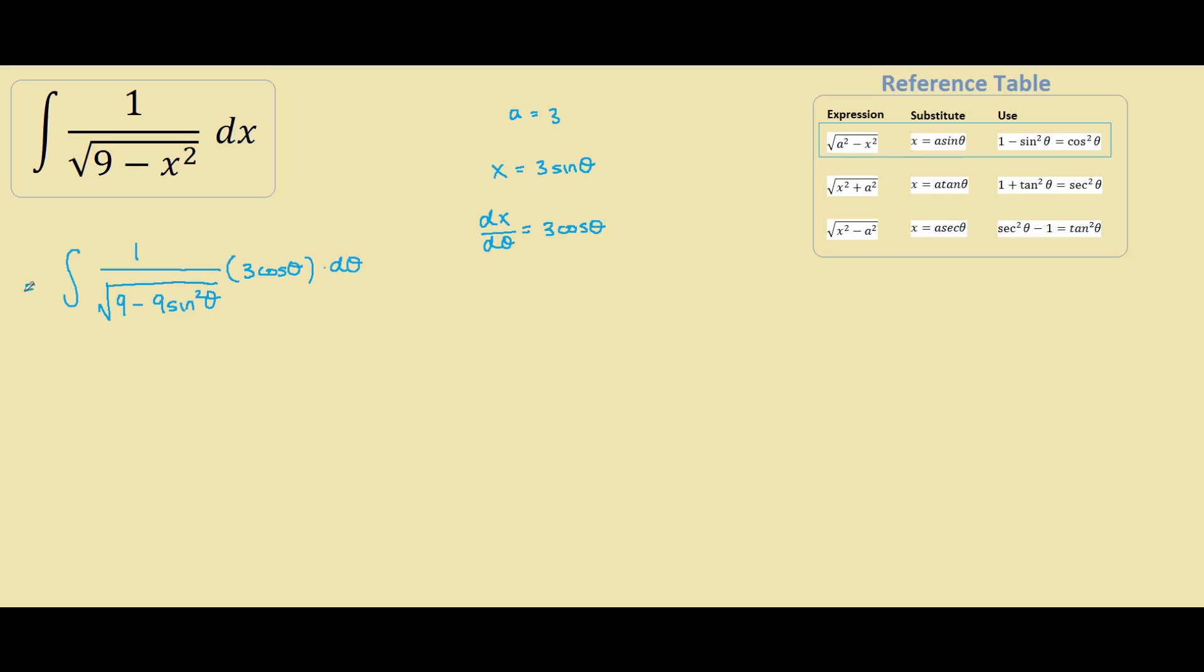Our next step is to recognize that 9 is a common factor under the square root. We can factor that out. So we have 3 cos theta times dθ over the square root of 9. Take the 9 out, you have 1 minus sin squared theta.